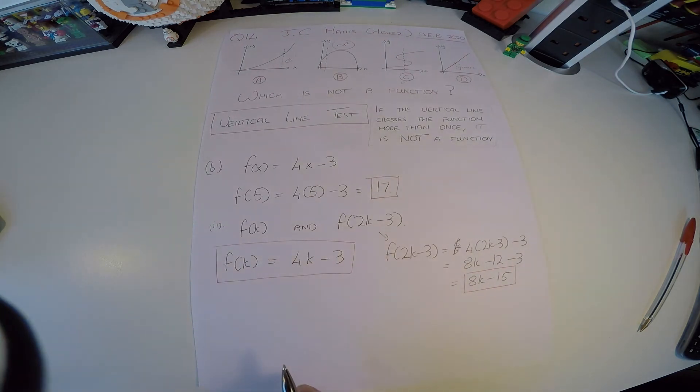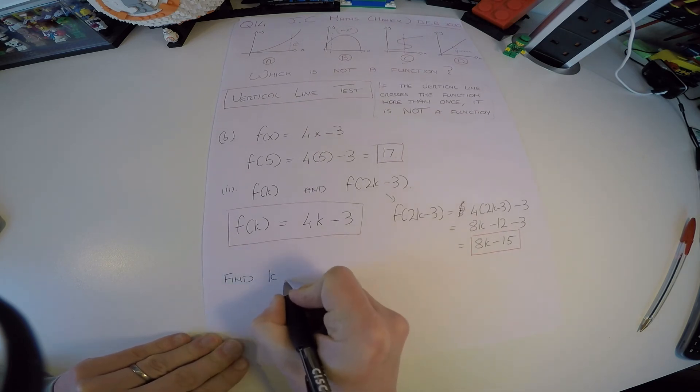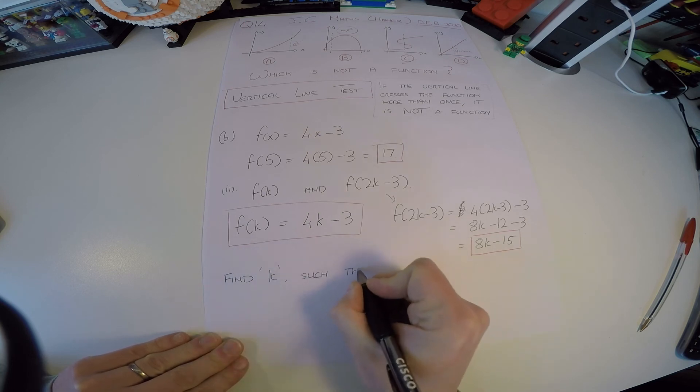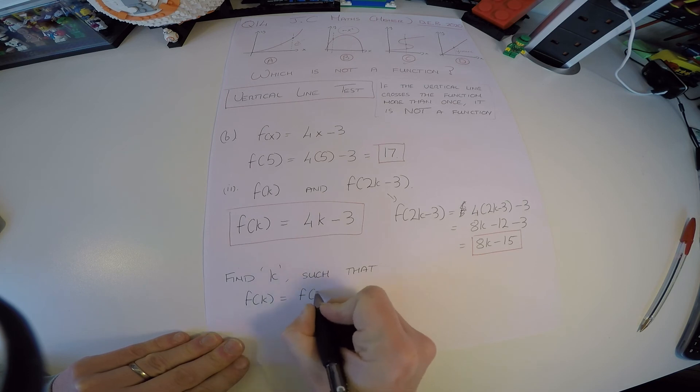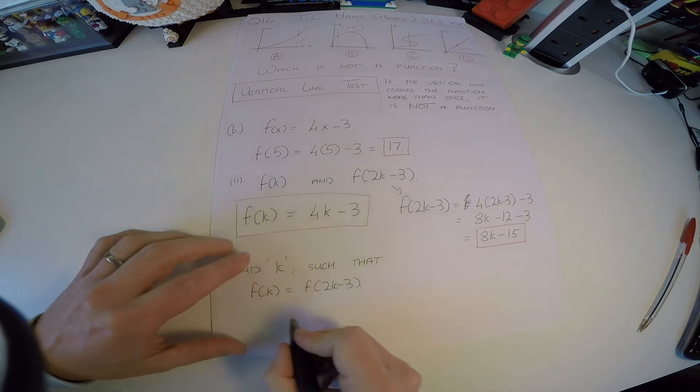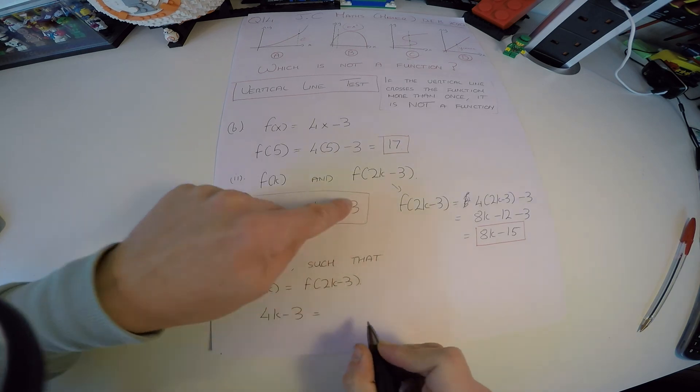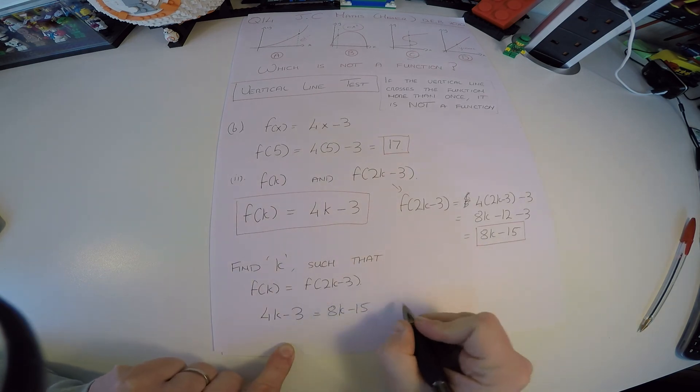And then the last question says, what if you get this? What's k equal to? Find a value for k. So if you like, find k such that f of k is equal to f of 2k minus 3. Well, we found f of k, it's 4k minus 3. We found f of 2k minus 3, which is 8k minus 15.